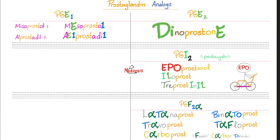How about prostaglandin F2-alpha? You have latanoprost — two alphas — travoprost, carboprost, bimatoprost, tafluprost. There is another mnemonic for carboprost because it reminds you of carbon dioxide, and carbon dioxide has two oxygens — F2-alpha.